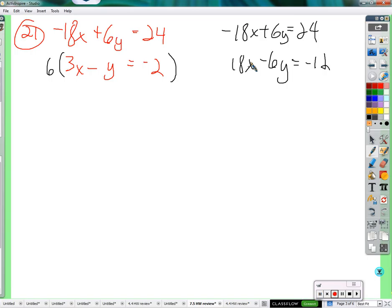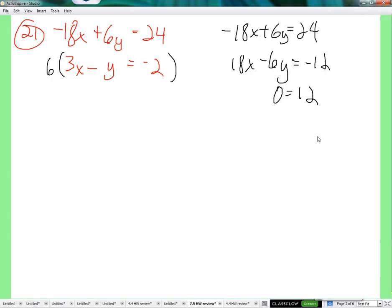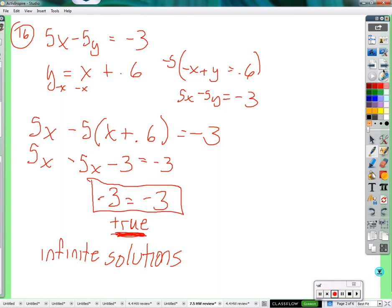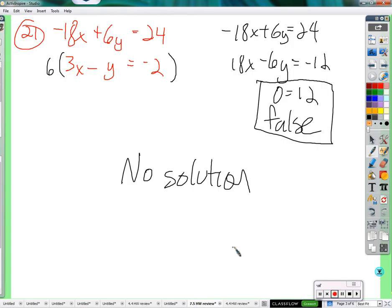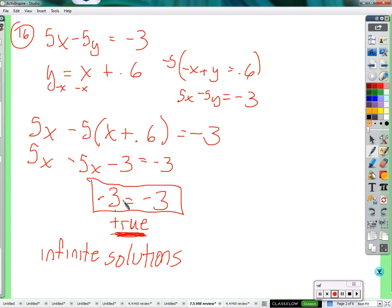Well, negative 18x plus 18x is 0. 6y minus 6y is 0. 0 equals 24 plus negative 12 is 12. So what do you notice is different about this equation as opposed to this equation? It's not true. Not true. So this equation here where all the variables are going to cancel out is false. So there's just no x and y that's going to work. It's impossible. So we have no solution.